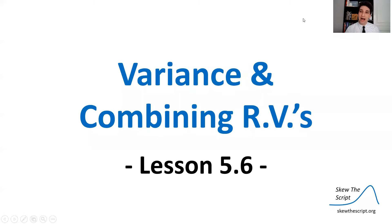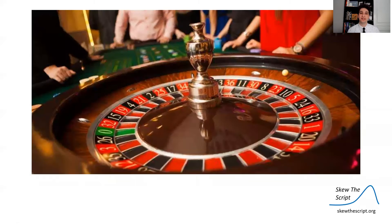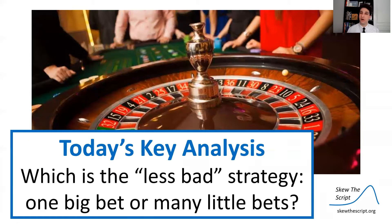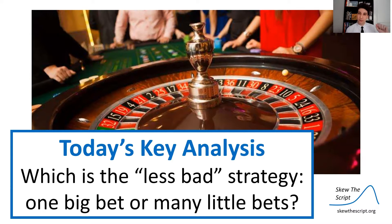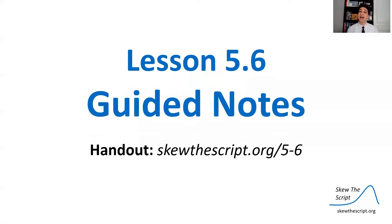Today's lesson is on variance and combining random variables. This is lesson 5.6 in our course sequence. We're going back to the roulette table to talk about this game. We know it's a bad game because the expected value is negative, but we're going to talk about a specific question: which is the less bad strategy — making one big bet in roulette or making many little bets? We'll talk about that at the end of today's lesson.